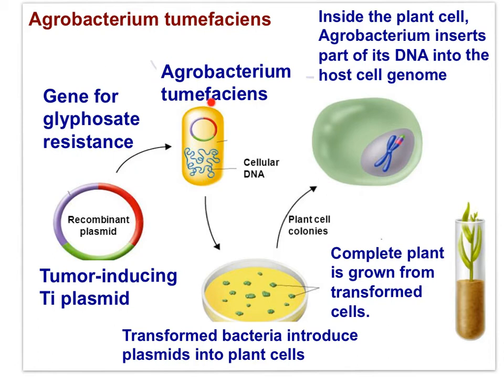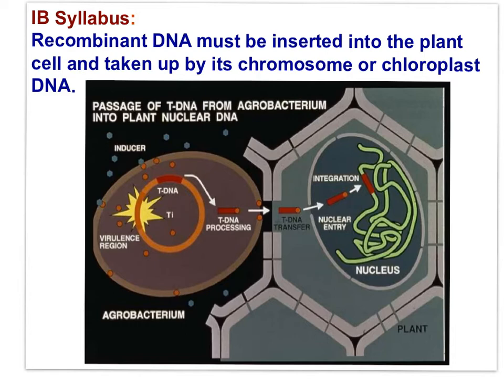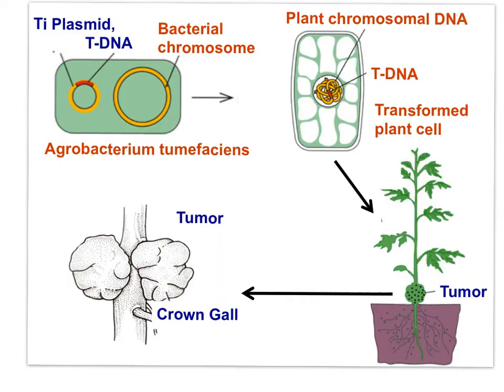First, the plasmid is taken up by bacterial cells of Agrobacterium tumefaciens. The bacteria infect plant cells, and the plasmid inserts itself into the plant genome to result in a transgenic plant with a new genome that includes glyphosate resistance. The recombinant Ti plasmid gets inserted into the plant cell and taken up by a chromosome or chloroplast DNA. In this diagram, you can see the Ti plasmid of Agrobacterium tumefaciens as it infects a plant cell, and the gene for glyphosate resistance is inserted into the plant genome.